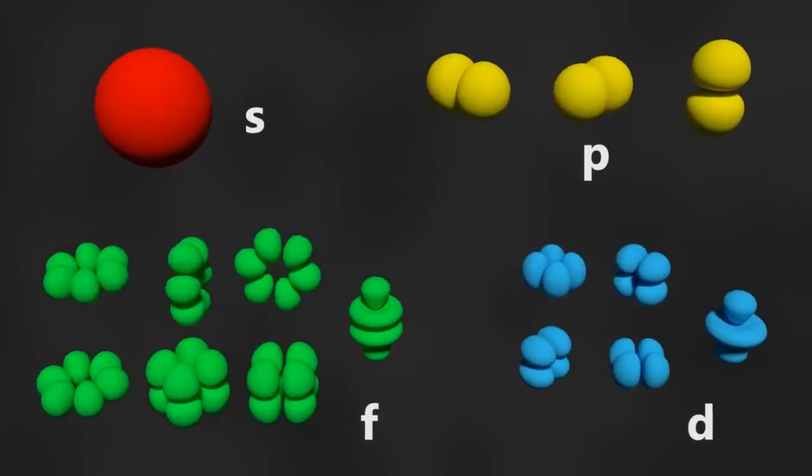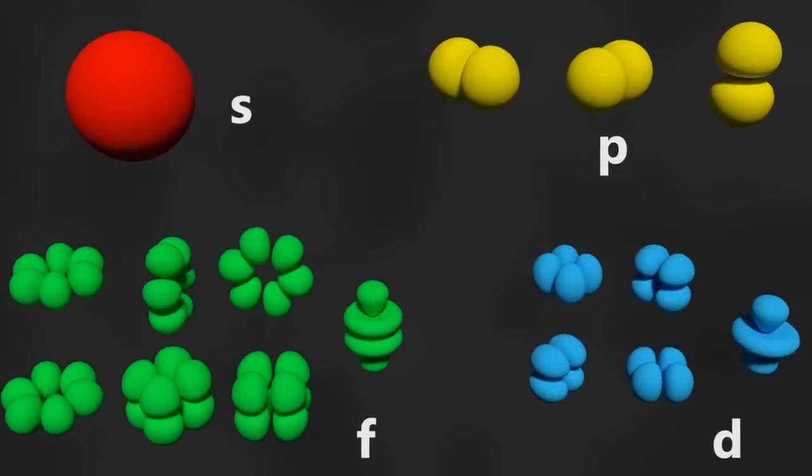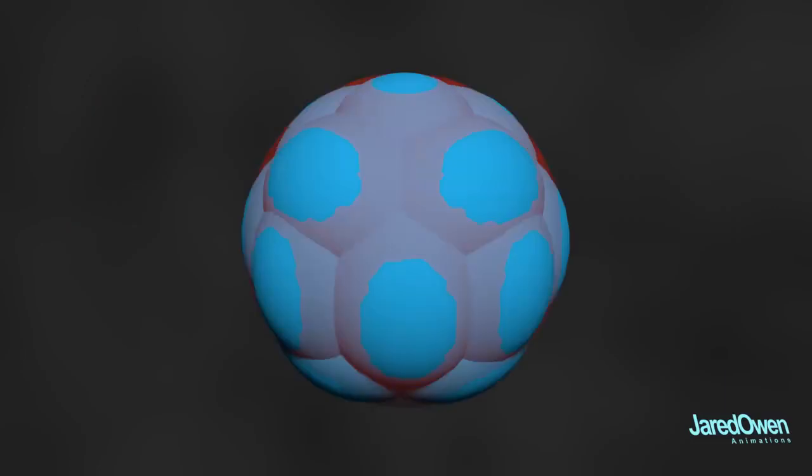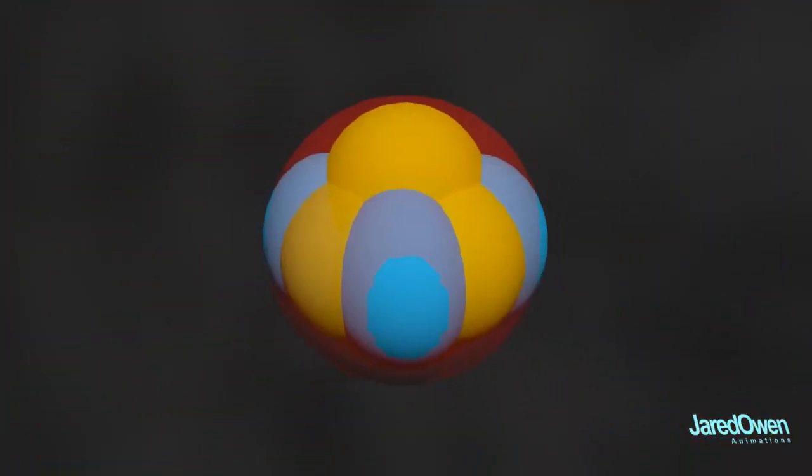Orbitals are specific shapes where electrons live in. If you were in a college chemistry class, you'd be studying about how these orbitals fill up as you get more electrons. But I'd like to keep things simple for this video.